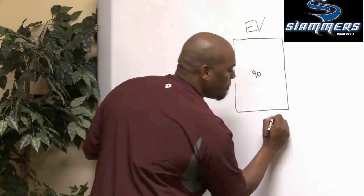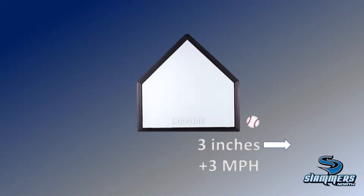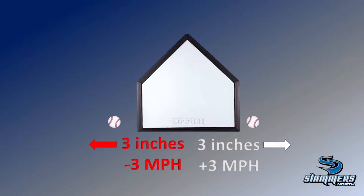With a right-handed hitter, according to effective velocity, every three inches that the pitch is thrown inside of the hitter, the pitch acts three miles per hour faster. Every three inches that the ball is thrown away from the hitter, the pitch acts three miles an hour slower.